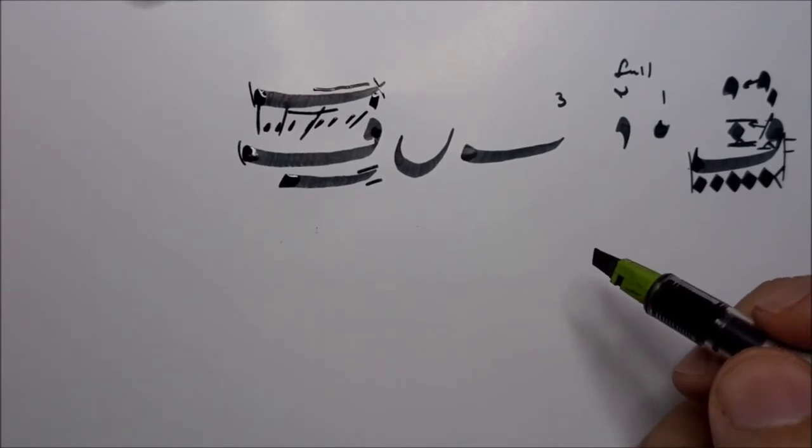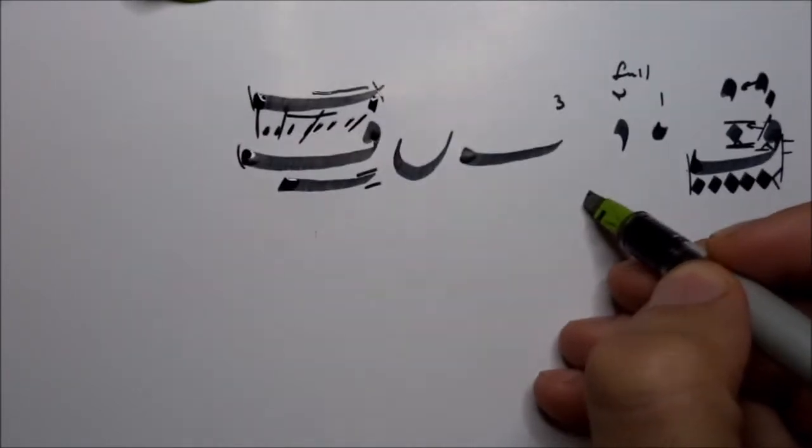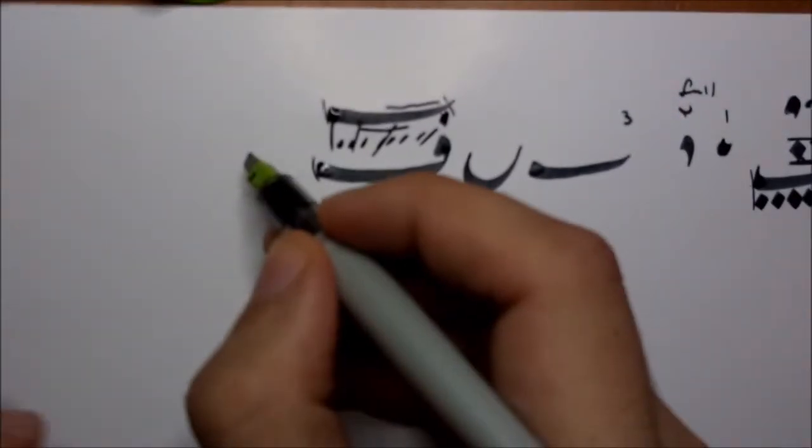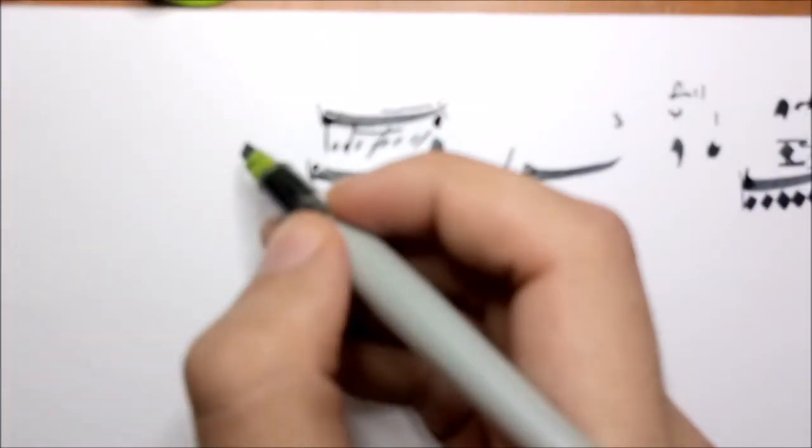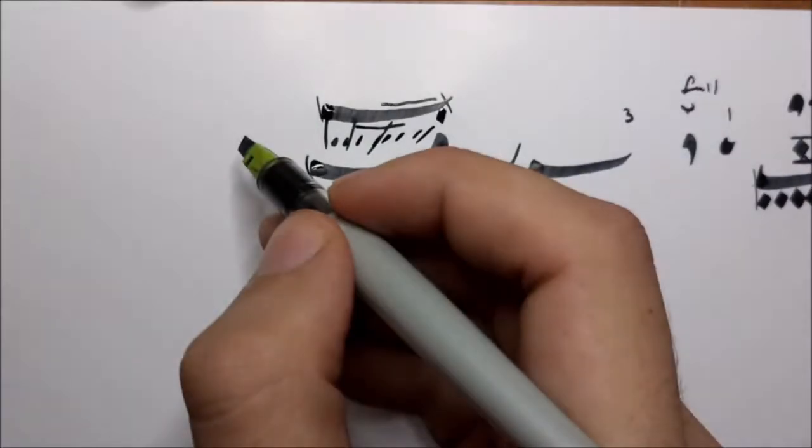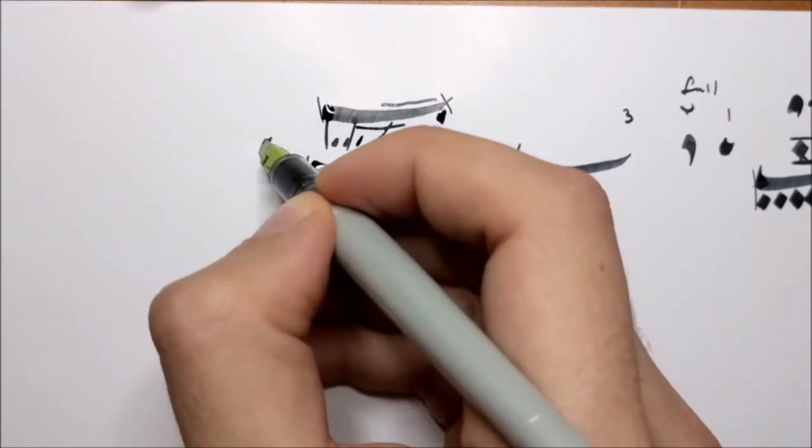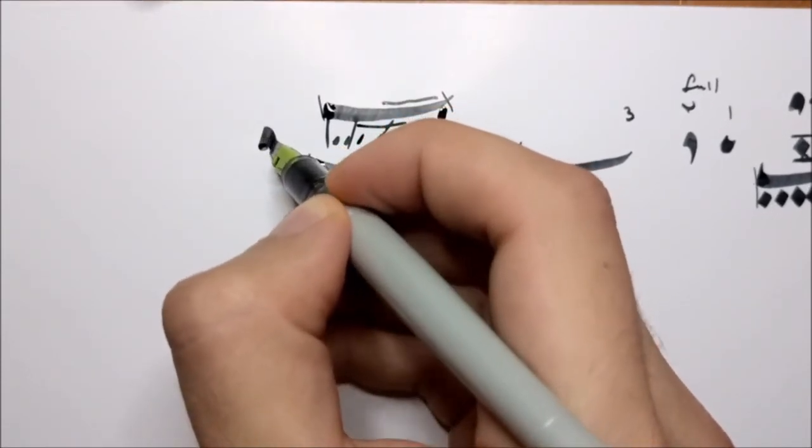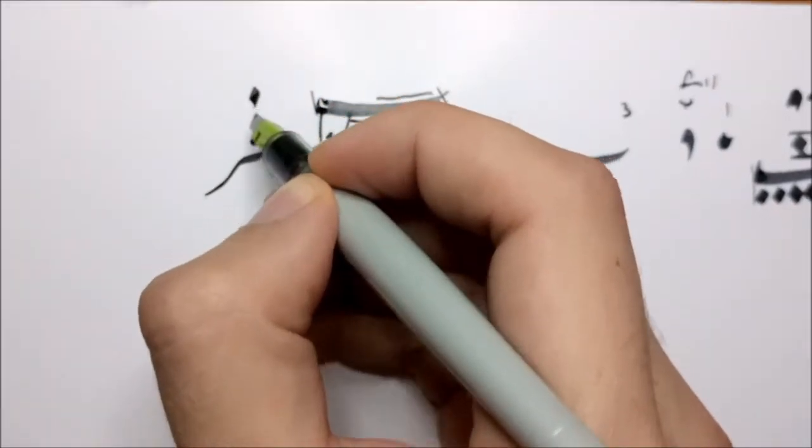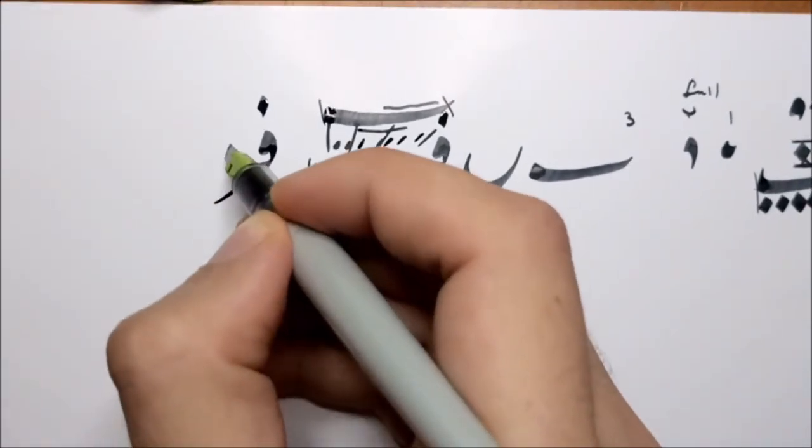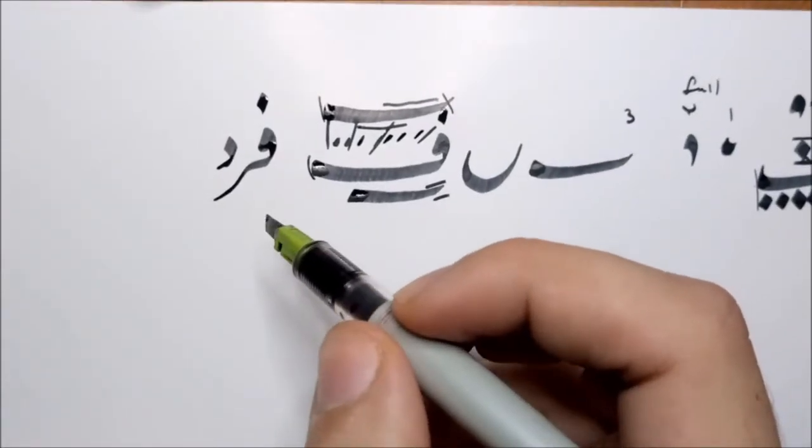Now when you connect a Fa it's the same thing. So you would use the same moves we talked about now and with them you would simply just connect it to whatever. So Fa, you could connect it to a Ra, then we add a Daal. And this way we have the word Fard which means a person.